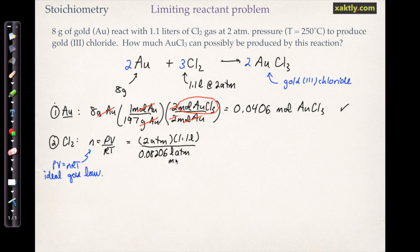So n equals pressure times volume over the gas constant times the temperature, and so I just have 2 atmospheres times 1.1 liters over 0.08206, that's the gas constant with its units, and then I'll convert the temperature 250 degrees into Kelvin. And so if I just cross out all my units that cancel, I end up with moles in the denominator of the denominator, which will come up to the top and give me units of moles of chlorine. And so just doing that calculation, I get 0.05126 moles of chlorine.